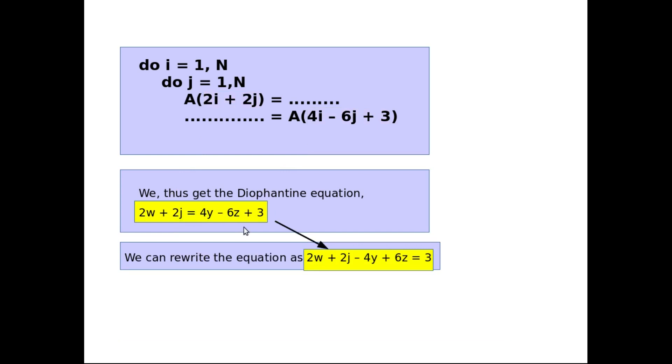So we have 2w plus 2x minus 4y plus 6z equal to 3.